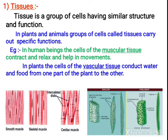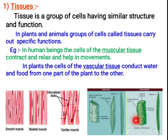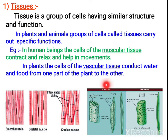Now let us take another example from plants. Plants have vascular tissue. Among vascular tissue, xylem and phloem are the vascular tissues of plants. Xylem is helpful in the conduction of water. You can see these are all different types of cells of xylem — they may all look different, but together they perform the same function, so you call them as xylem, coming under vascular tissue.